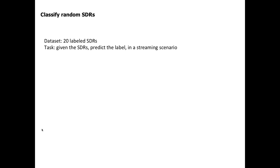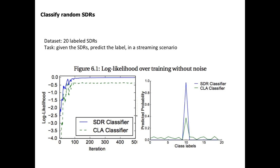Here I'm showing the performance over time in an online learning fashion. For both SDR and CLA classifiers, the likelihood improves as the classifier learns. At the end of learning, looking at the modal output when the true label is number 10: for the SDR classifier, it's almost predicting perfectly, being very confident about class number 10. For the CLA classifier, because incorrect predictions are not penalized, it also predicts other classes with small probability.